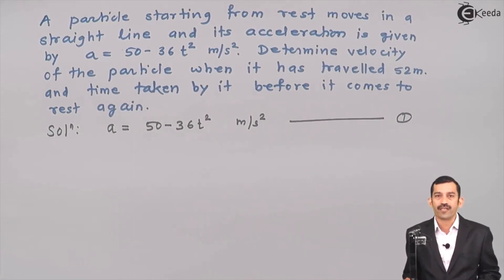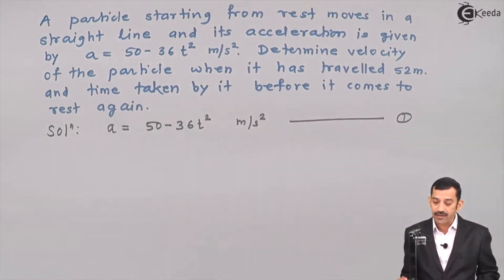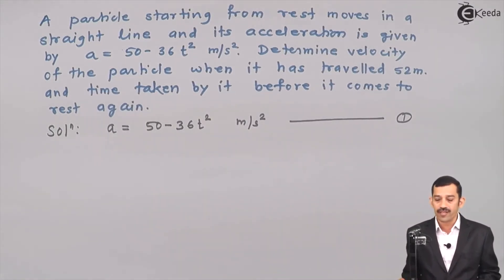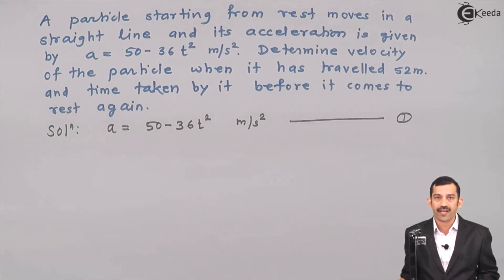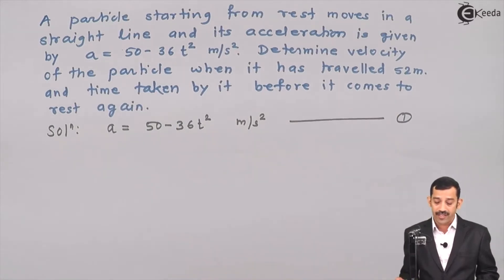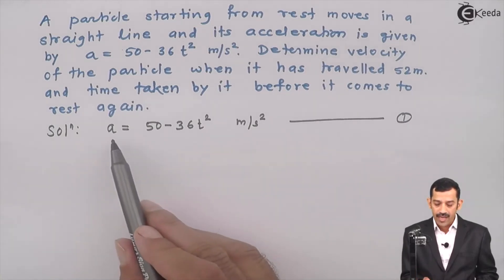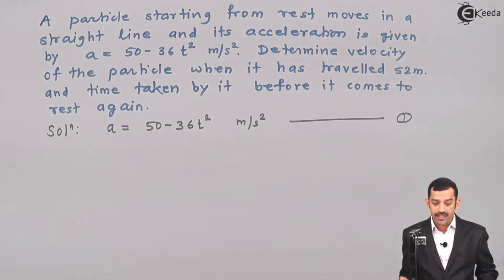The problem asks us to determine velocity when the particle has traveled 52 meters — so a relation between velocity and position x is required. It also asks for the time before the particle comes to rest again, meaning when velocity becomes zero, so a relation between time and velocity is also required.